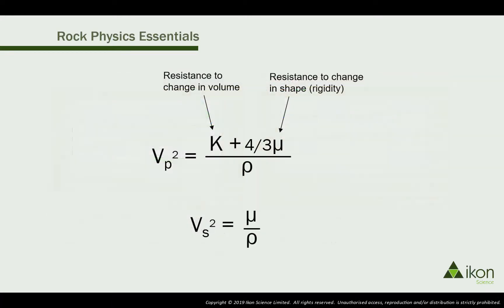VS squared is the shear modulus divided by the density, so it simply increases with the reducing density.